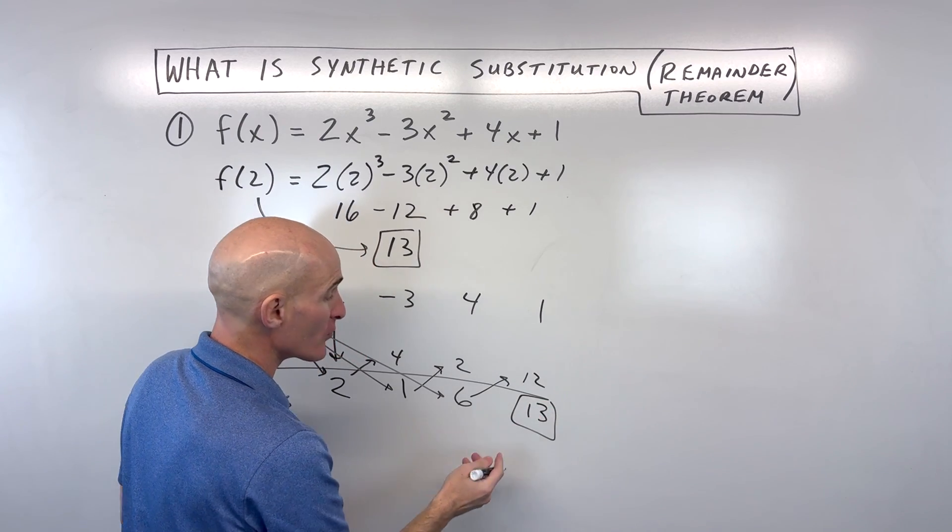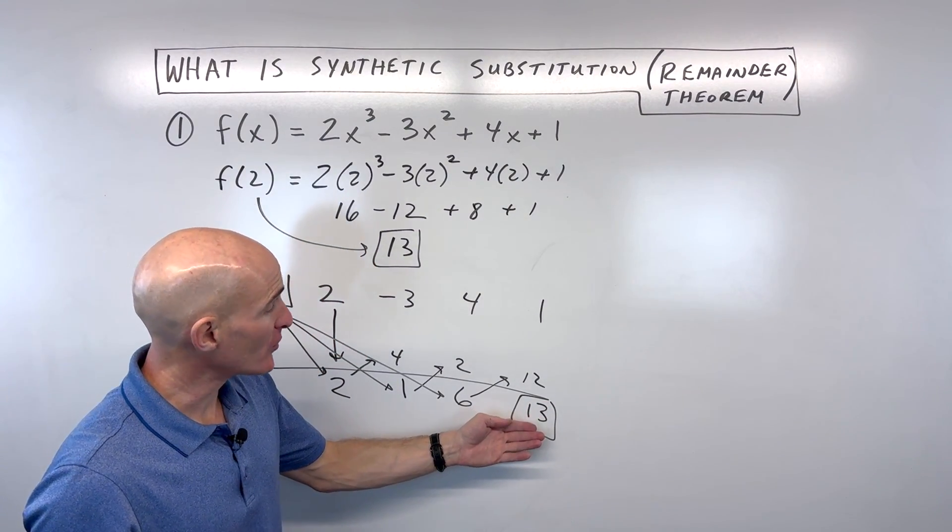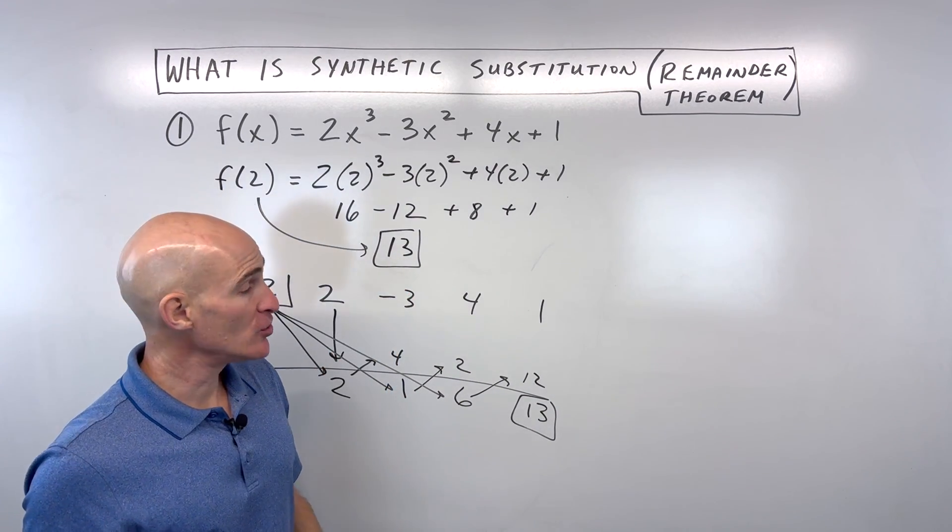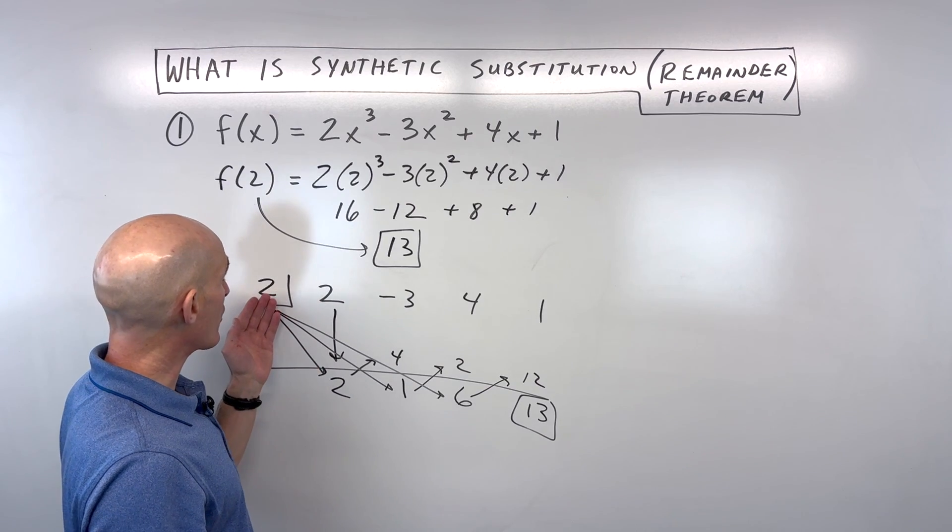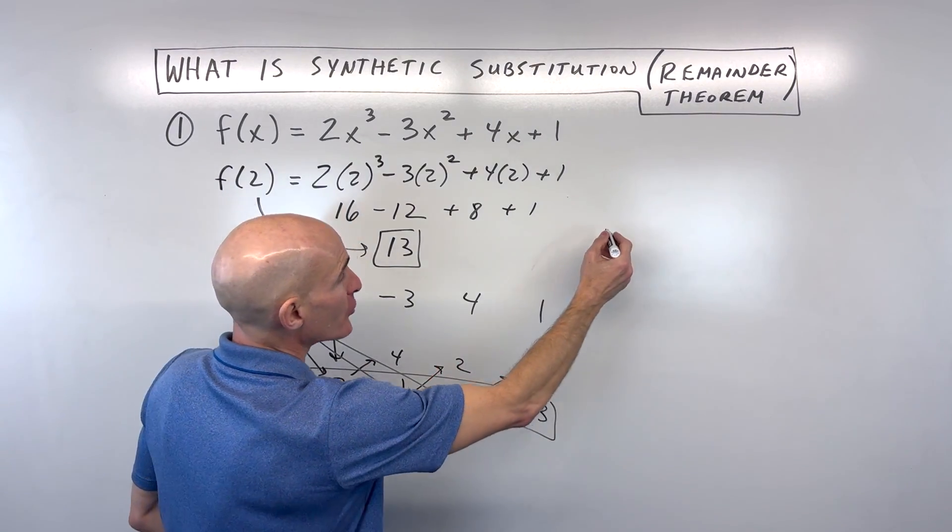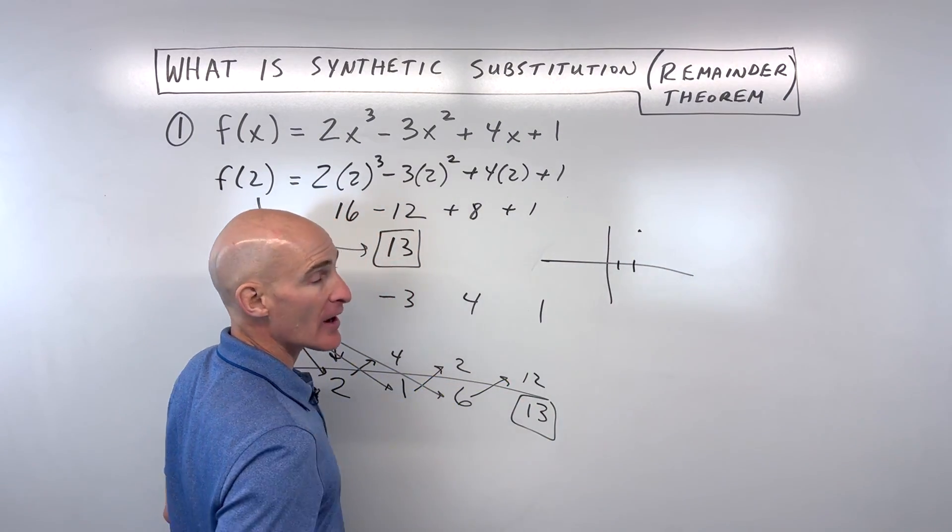And this last number, if you remember from synthetic division, this is our remainder. But the remainder, you can see, is the exact same thing that we got when we did the direct substitution. So our remainder is actually our answer. So we're putting 2 into our function. We're getting 13 out on a graph. If you were graphing this polynomial when x equals 2, y would be up here at 13.